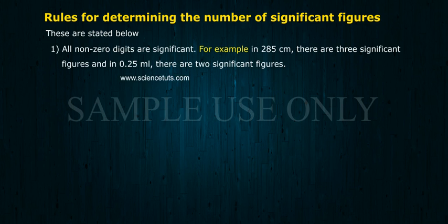Rule 1: All non-zero digits are significant. For example, in 285 cm, there are three significant figures, and in 0.25 ml, there are two significant figures.